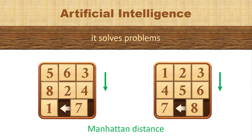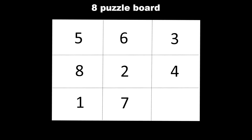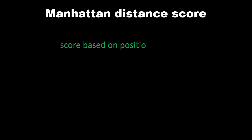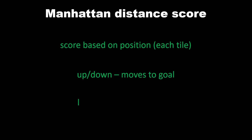We've got tiles and we want to put them in order. We start off with a simple board where the numbers are not in order, and our goal is a board where the numbers are in order — we have a blank or zero and one to eight. The score we're going to use is created from the Manhattan distance from moves up, down, left, and right to the goal for each tile.